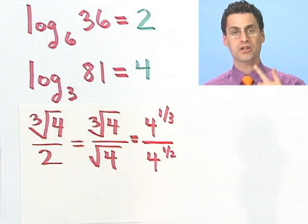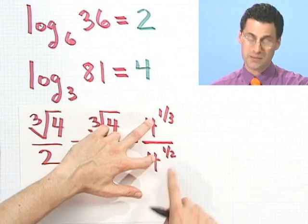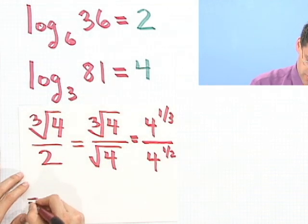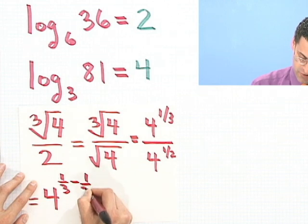And then remember that the laws of exponents work in the following way. If I have the same bottom, but I'm taking quotients, then I subtract the exponents. So this actually equals 4 raised to the 1 third minus 1 half power,